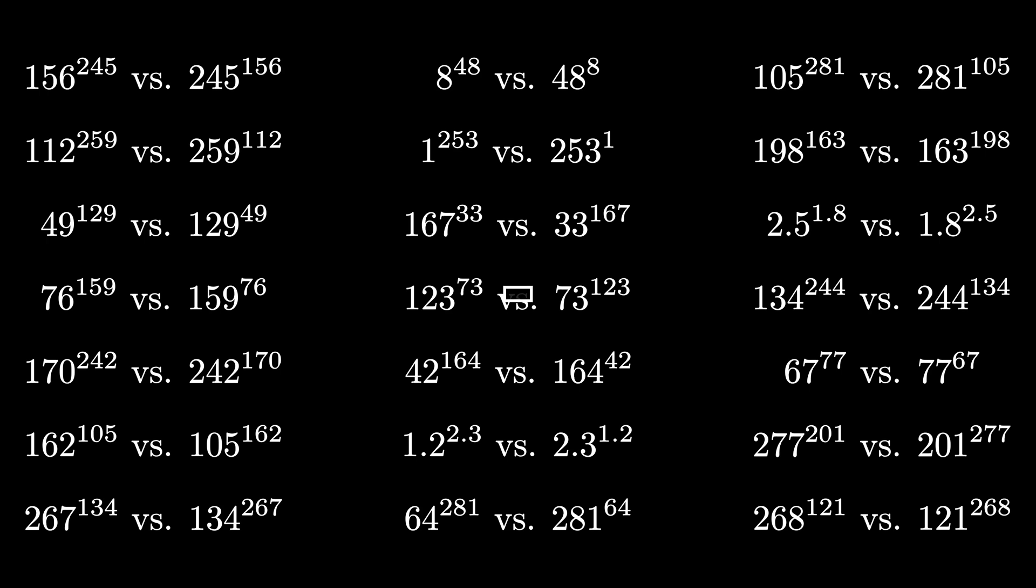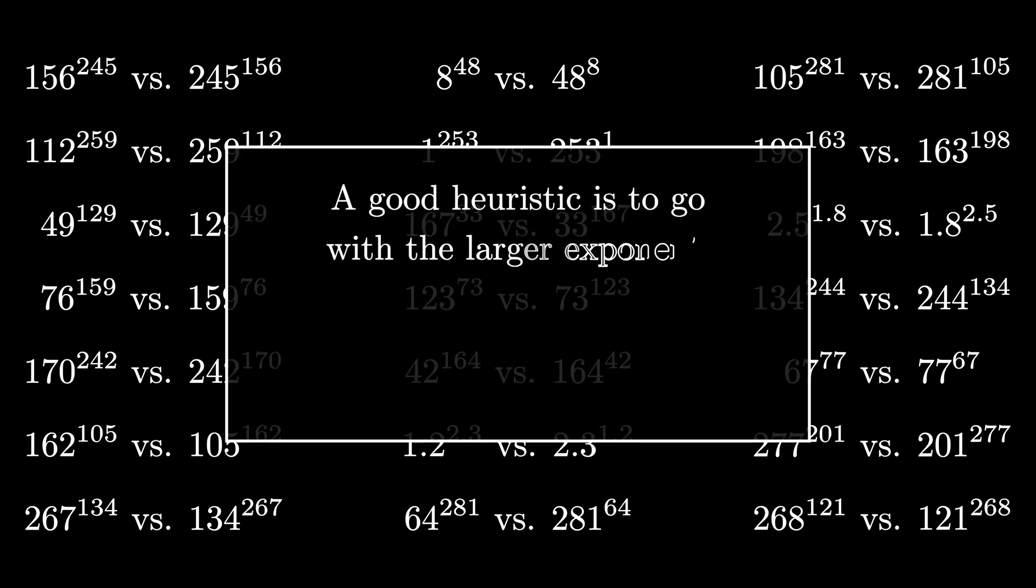The common heuristic is to go with the larger exponent most of the time. Let's investigate two visual proofs that justify why the number with the larger exponent typically is the larger value.